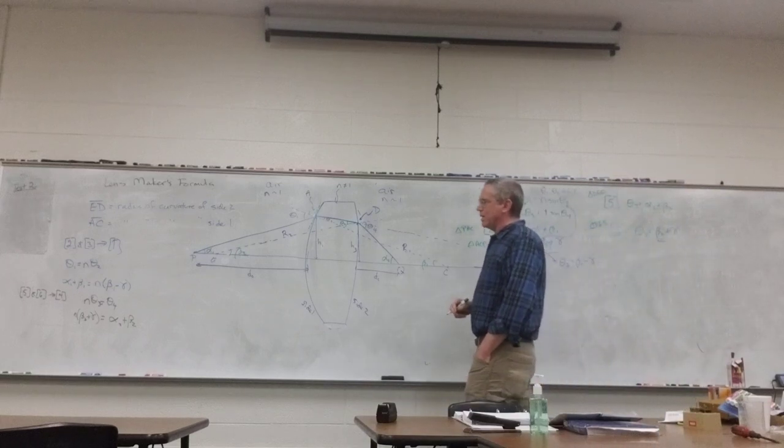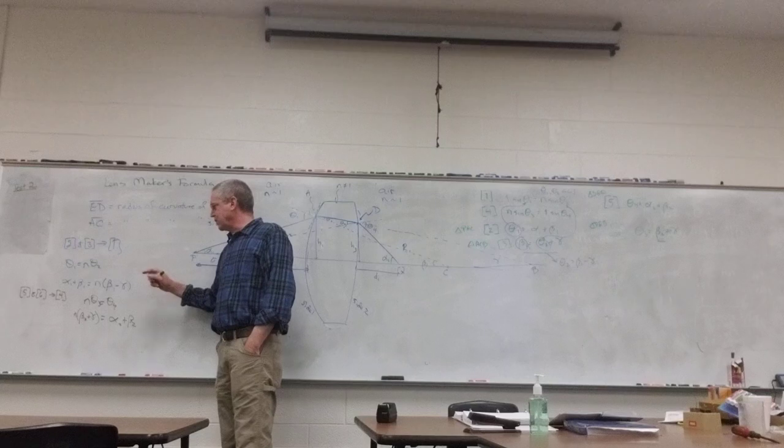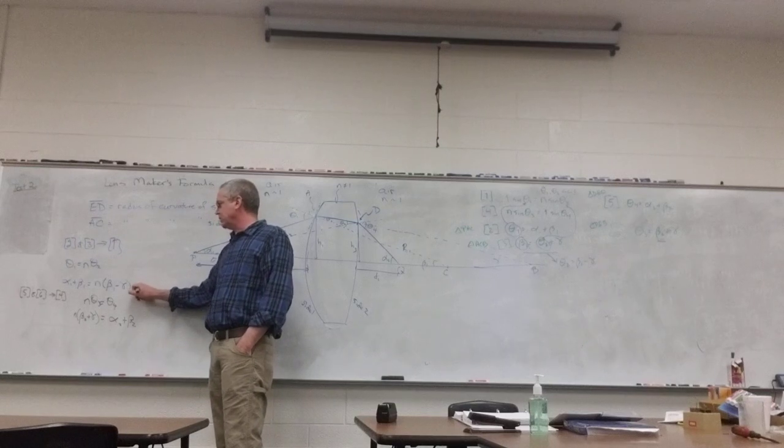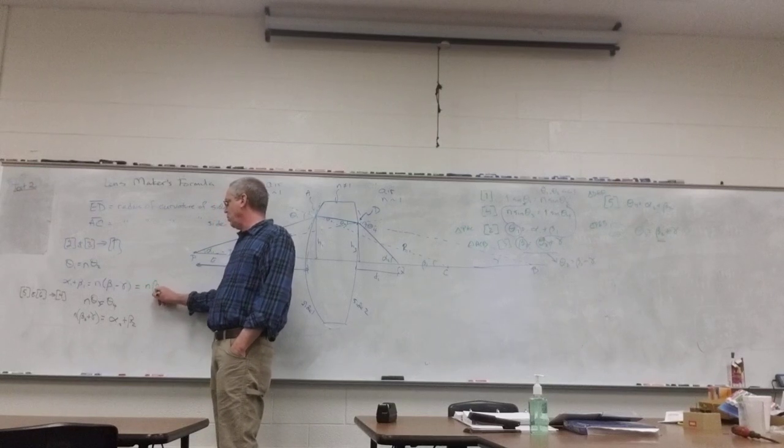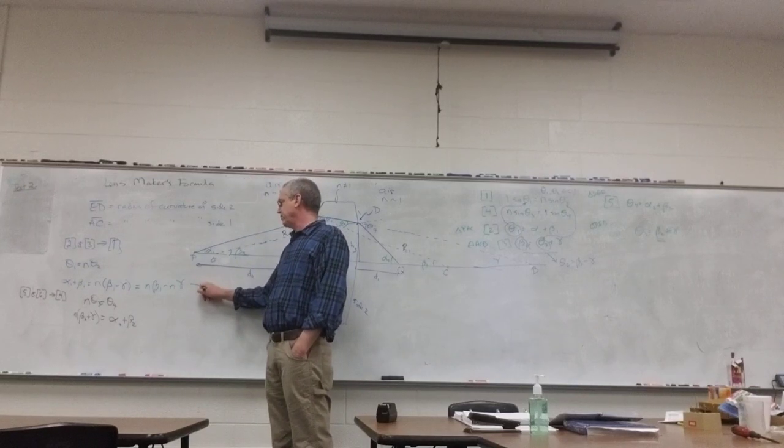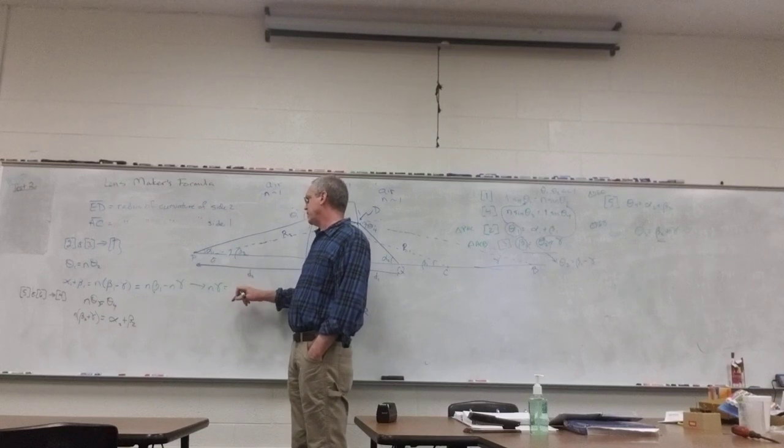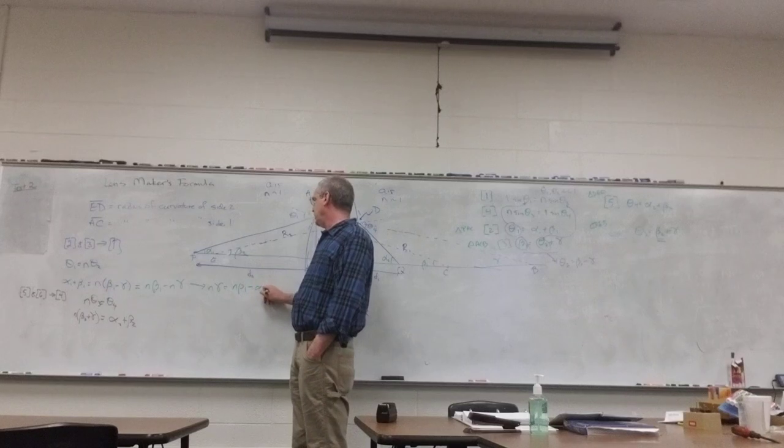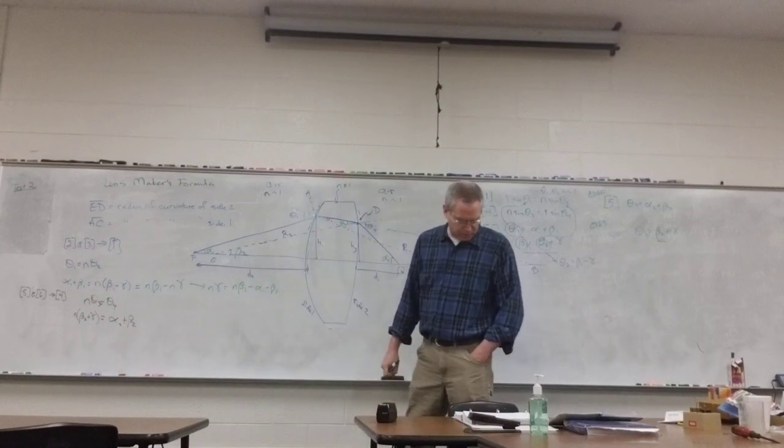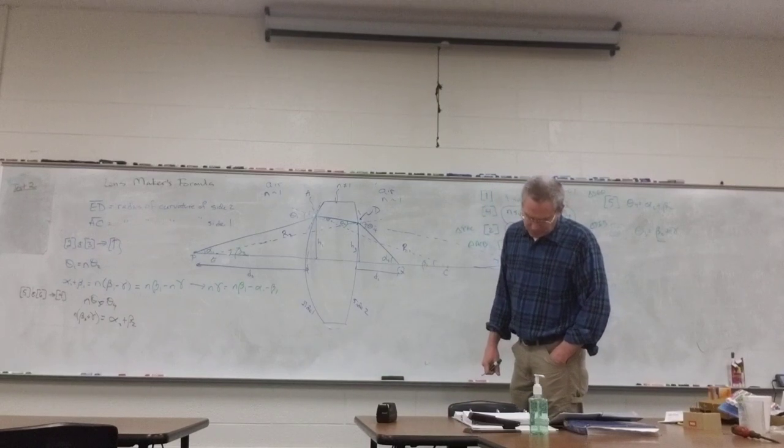Alright. I now have these two equations, and I want to combine them somehow. So I'm going to distribute here. This is n beta 1 minus n gamma. And then I'm going to solve for n gamma.